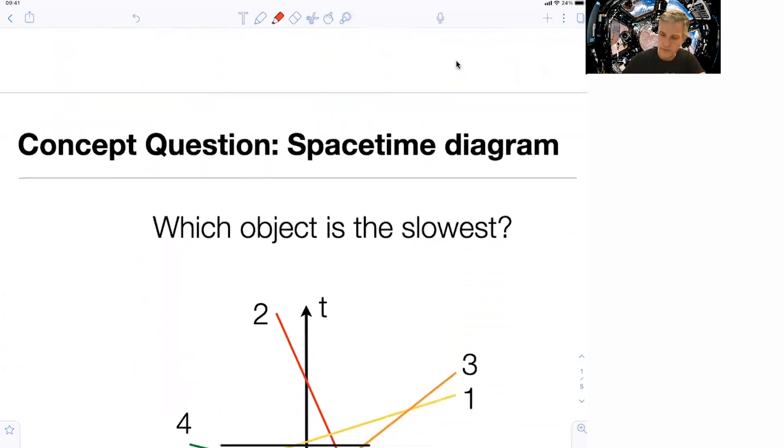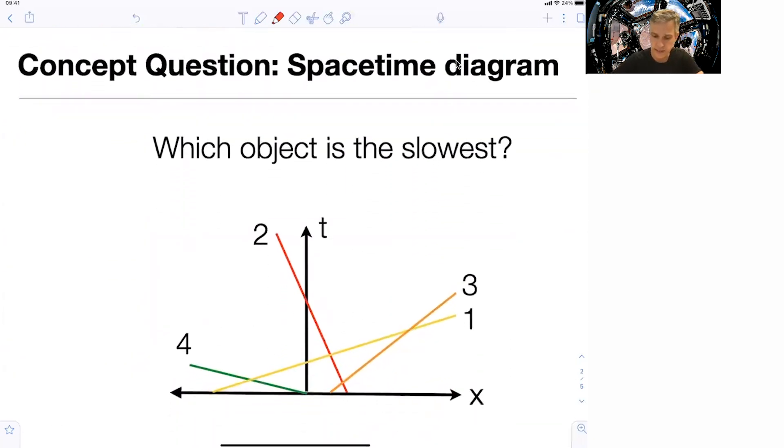OK, so now a first concept question. Let's consider the set of world lines, 1, 2, 3, 4. And the question is, which of the objects which correspond to the world line is moving the slowest? So let's consider this for a second, and then we look at this.